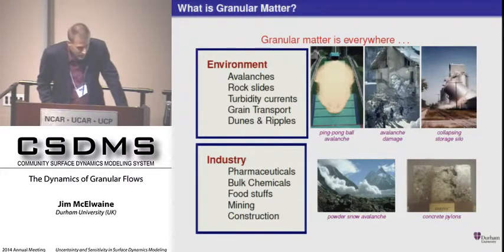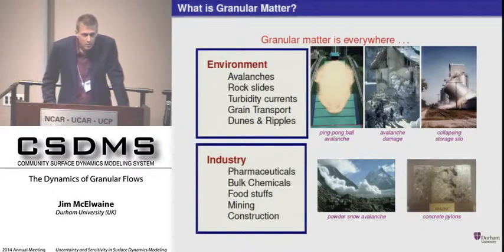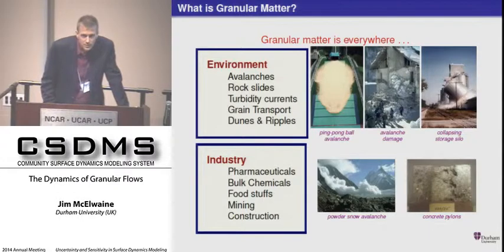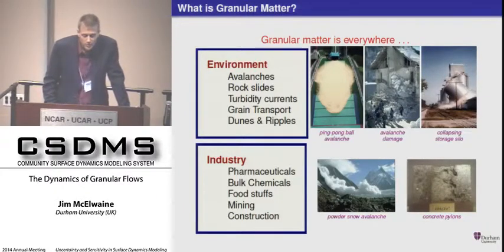Powder snow avalanches are shown at the bottom. There's also a picture of a broken concrete pylon — concrete is a very poorly sorted mixture of grains held together in a matrix. Every few weeks somewhere around the world a poorly built concrete building collapses. Often the problem is not enough cement, but it can also be due to the fact that the materials have segregated when mixing the concrete. If you have all small particles in one part of the structure and big particles somewhere else, the thing is going to break.